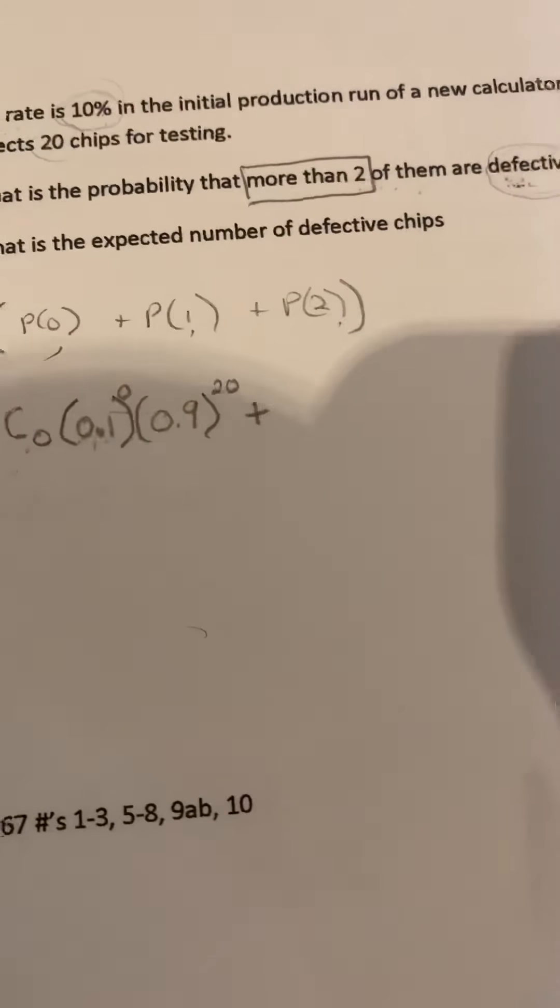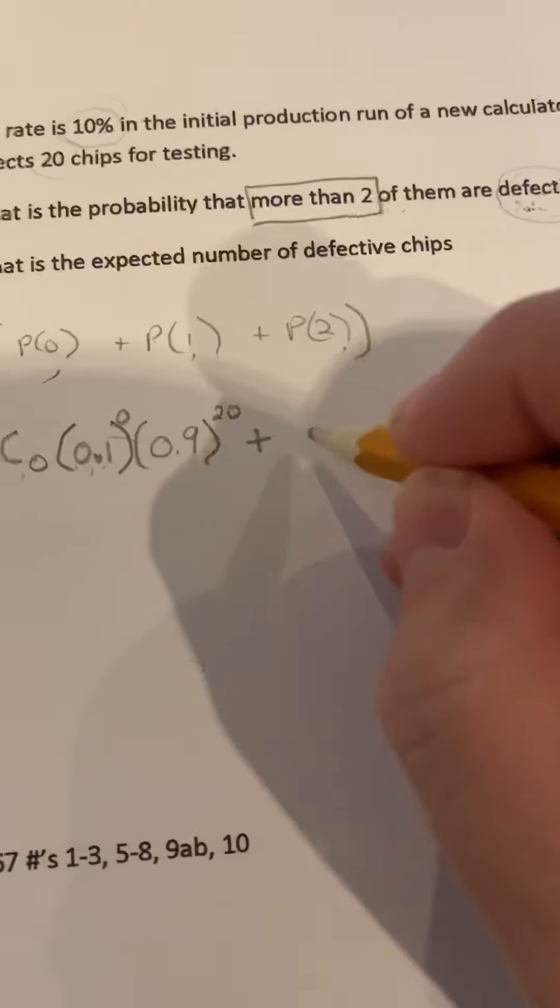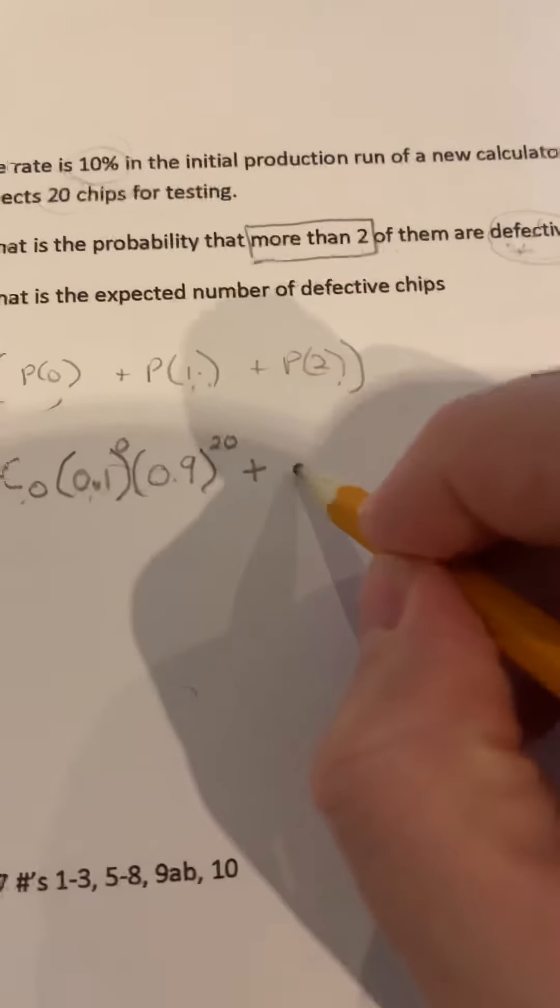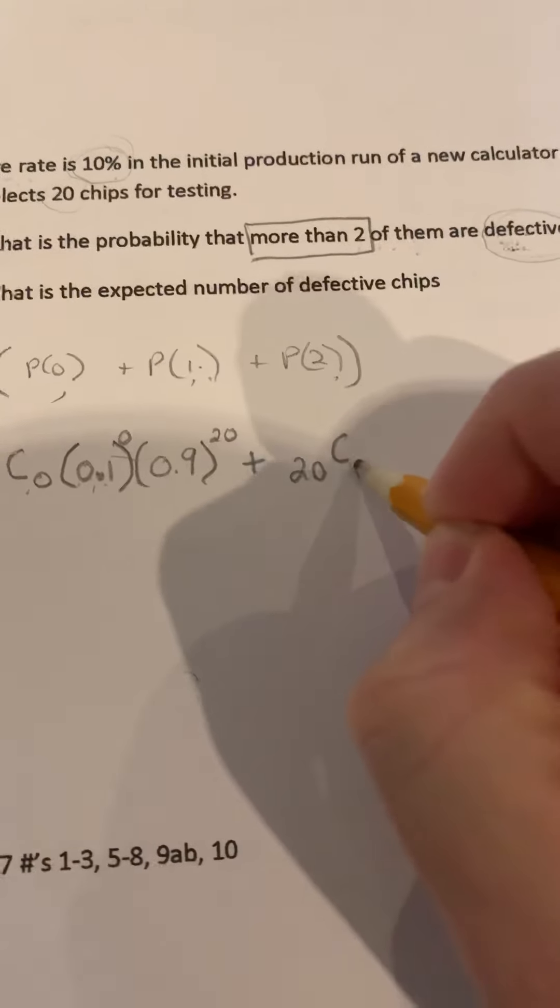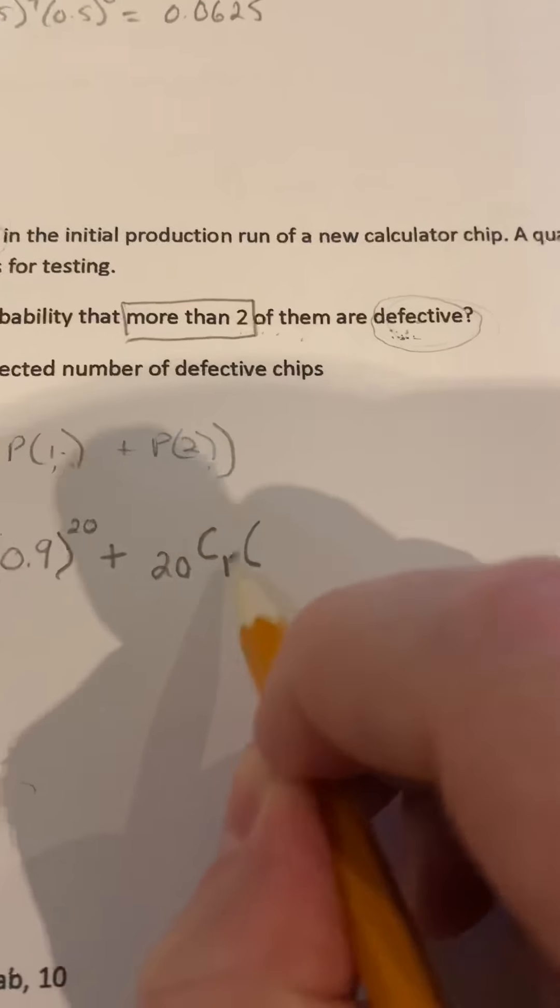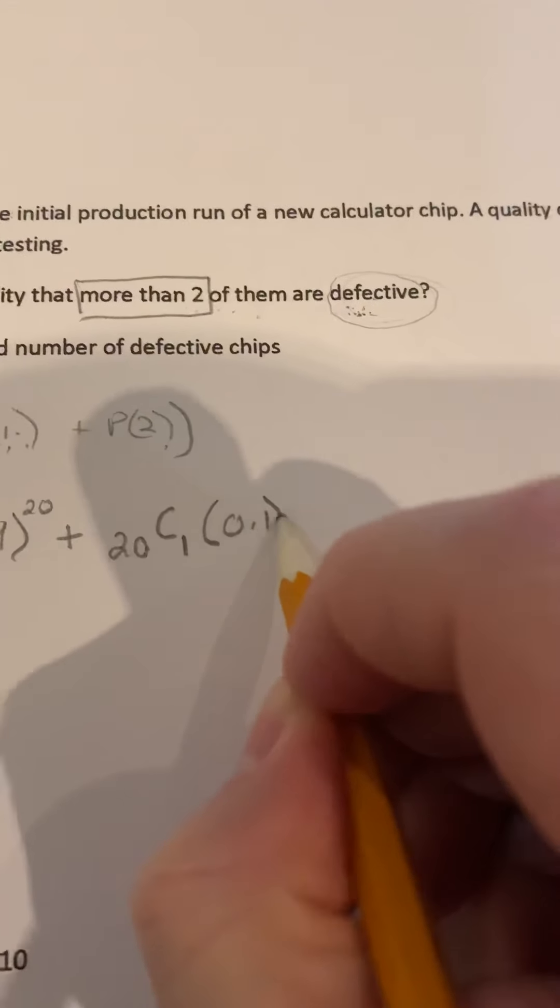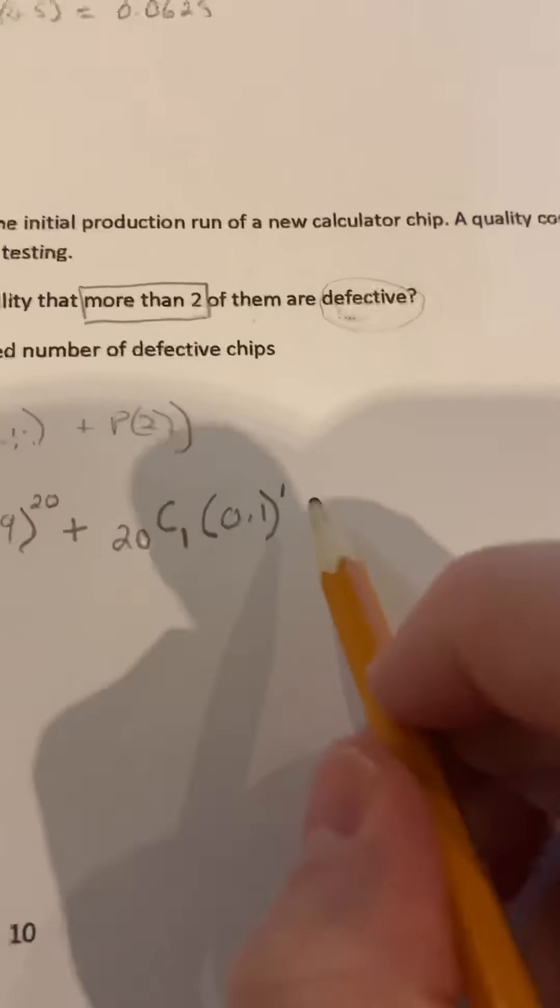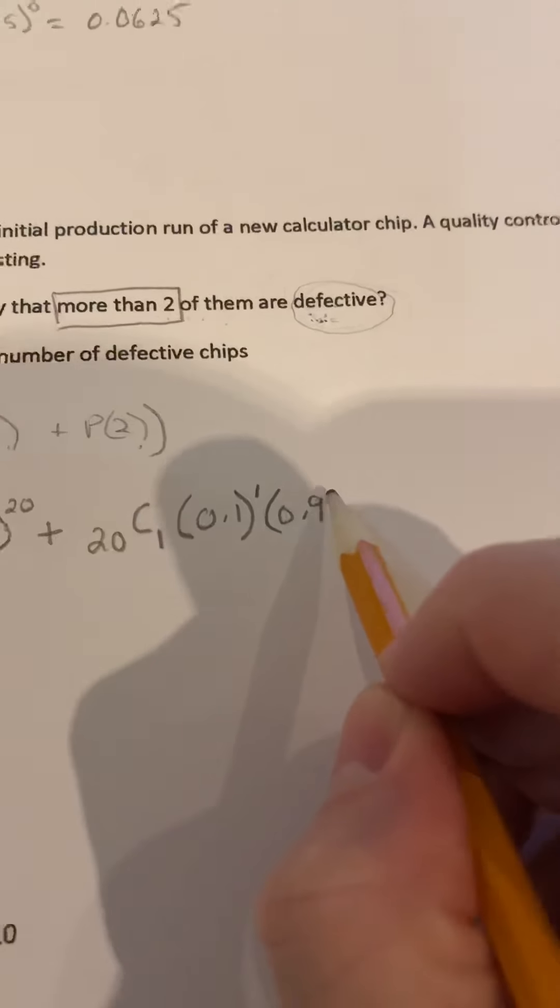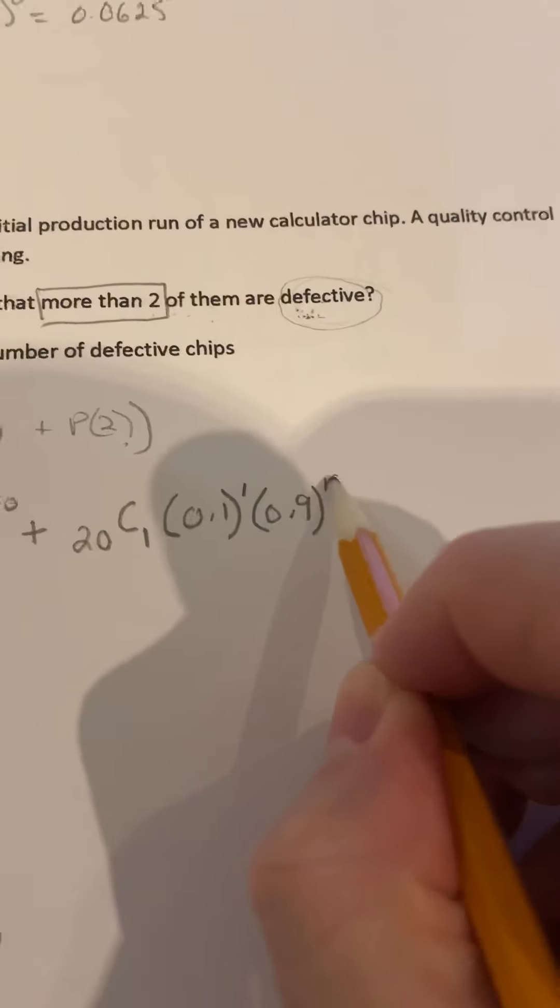Plus. Now we're going to do it for one defect. So one defective chip. So out of 20, we're choosing one defective chip. So probability of one defect, or just any defect in general, is 0.1. Now our X is 1. And this is 0.9. So 90% chance that it won't be defective. And this is now to the power of 19.